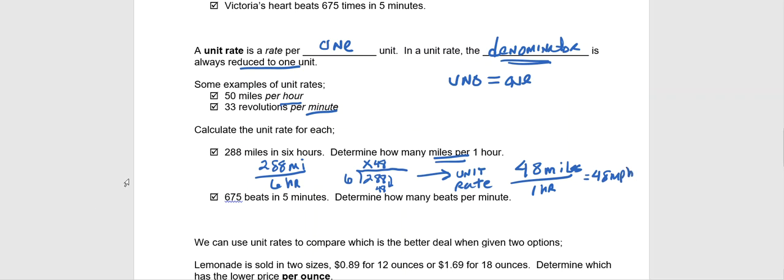So in a similar way, I want you to solve for the beats per minute, the heartbeats per minute, knowing that we have 675 beats in five minutes. I want you to solve that as a unit rate that's going to give us some number of beats per minute. That's going to be left for you to do, and we will check in tomorrow.